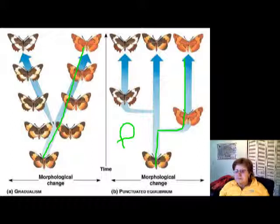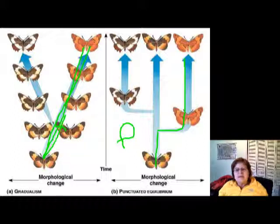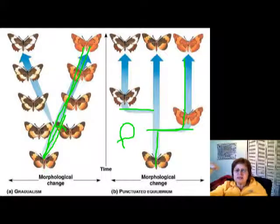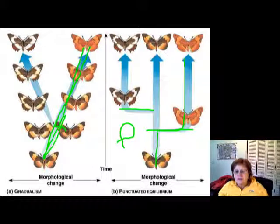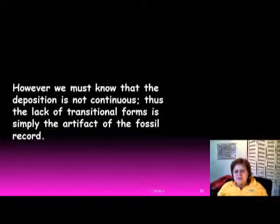Stephen Gould came up with punctuated equilibrium because of the missing transitional forms that gradualism would require. While we do have many examples of gradual change with transitional forms, there are species that seem to change suddenly. However, we must know that deposition is not continuous — we talked about unconformities — so the lack of transitional forms doesn't necessarily mean anything; it could just be an artifact of the fossil record.